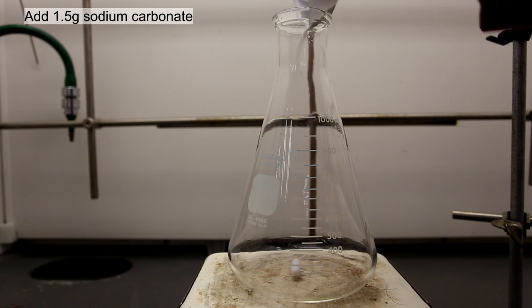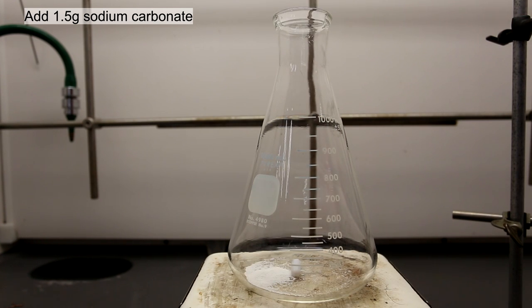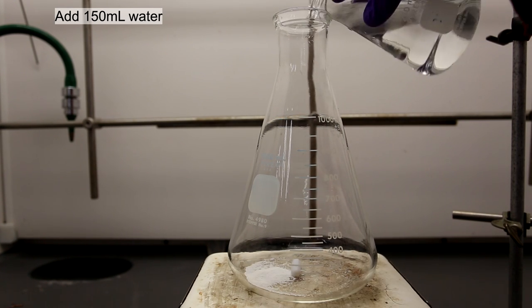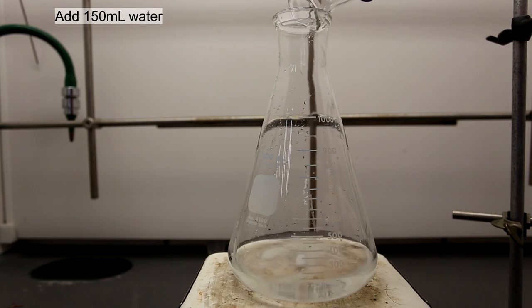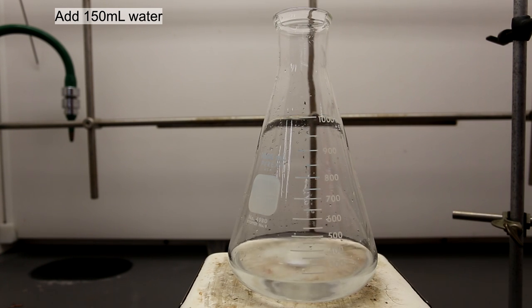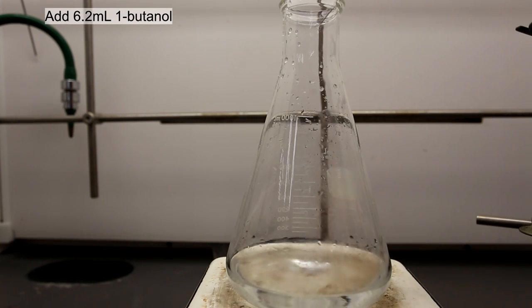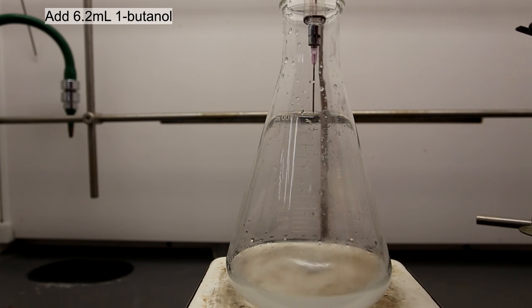To a large 1-liter flask, add about 1.5 grams of sodium carbonate. Dissolve the sodium carbonate in about 150 milliliters of water. Finally, to the sodium carbonate solution, add about 6.2 milliliters of 1-butanol.